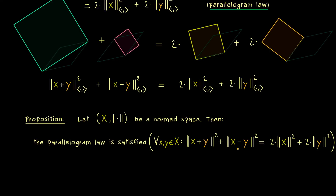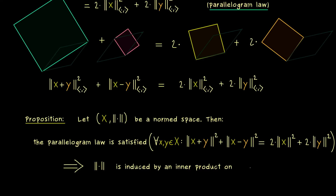You could say that the abstract geometry this norm space describes still has this nice property with parallelograms. However, this property is actually already very restrictive for the geometry, because what we get is that in that case the norm is already induced by an inner product. This means we can find an inner product on the vector space X such that the induced norm equals the original norm — so there is simply no choice, such a norm space has to be an inner product space as well.